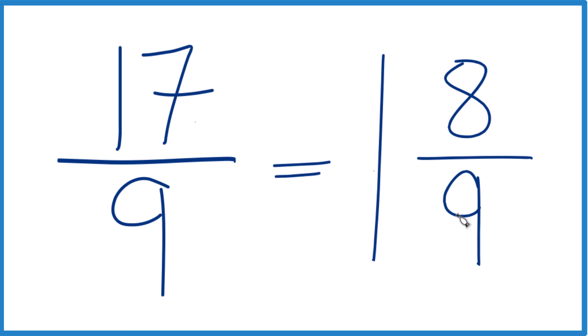1 times 9, that's 9. 9 plus 8, that's our 17. Just keep the 9 across.